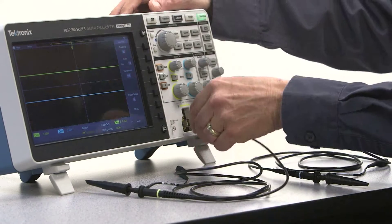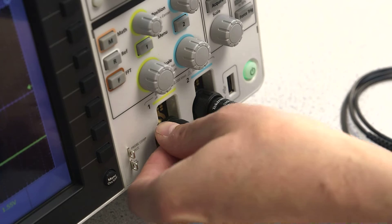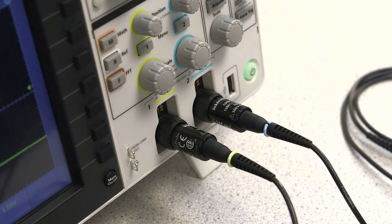Each TBS 2000 comes with high-quality, CSA-approved, 10X voltage probes, one for each channel.